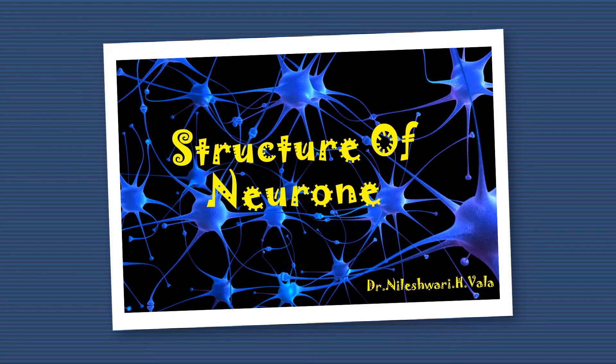Hello students, today's topic is on the structure of the neuron. We will discuss in detail about the structure of the neuron and the differences between the axon and dendrites. In a previous lecture we already discussed about the neuron and the types of neuron.